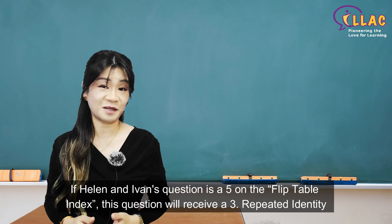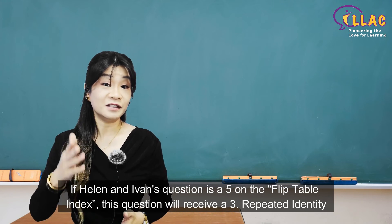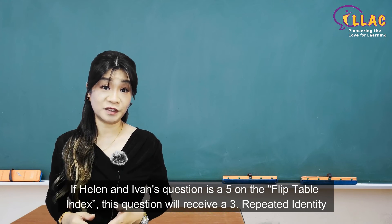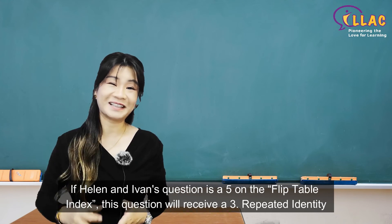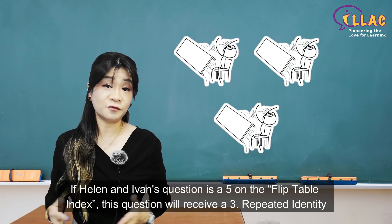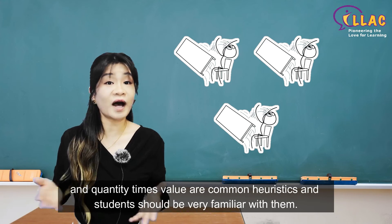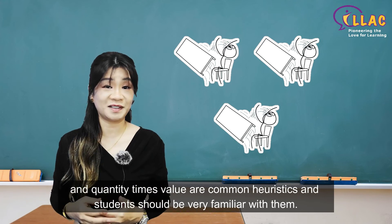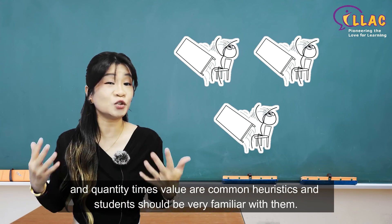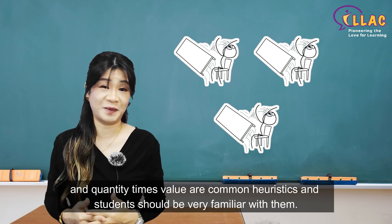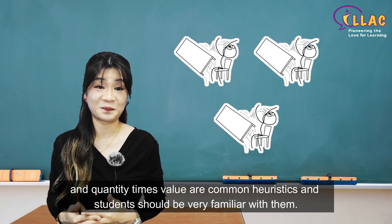If a harder question scores a 5 on the difficulty index, this question will receive a 3. Repeated identity and quantity times value are common heuristics and students should be very familiar with them.